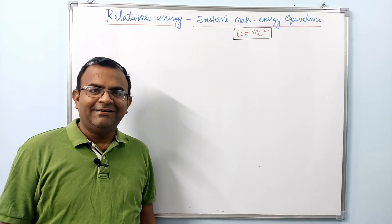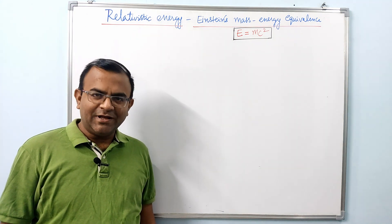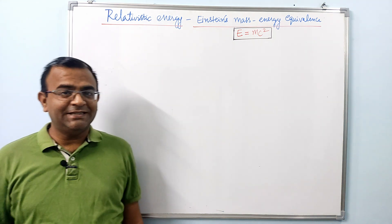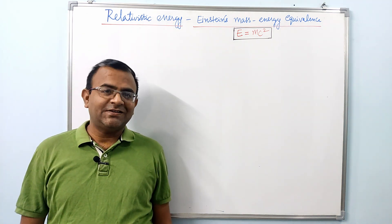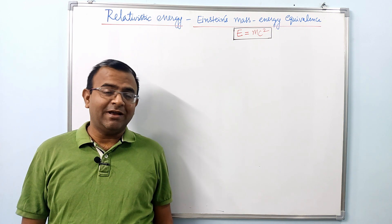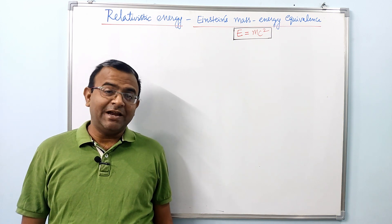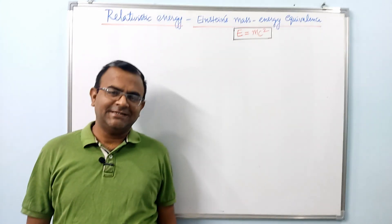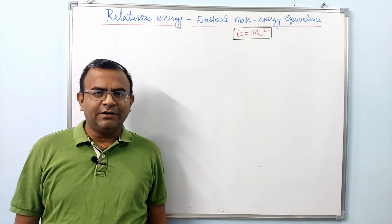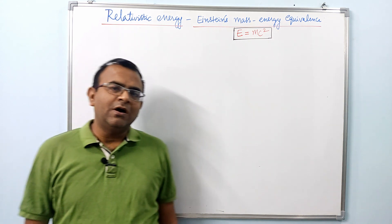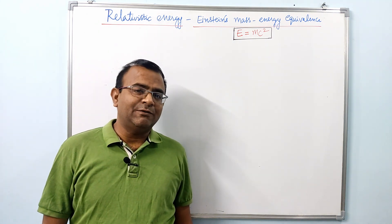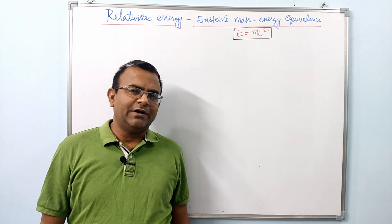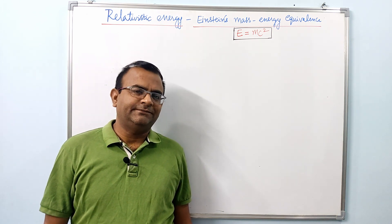Welcome to the ultimate physics channel. The topic of today's video is relativistic energy and Einstein's mass-energy equivalence, leading to the very famous equation in all of physics: E is equal to mc². In this video, I am going to discuss mass-energy equivalence and derive the expression E = mc².